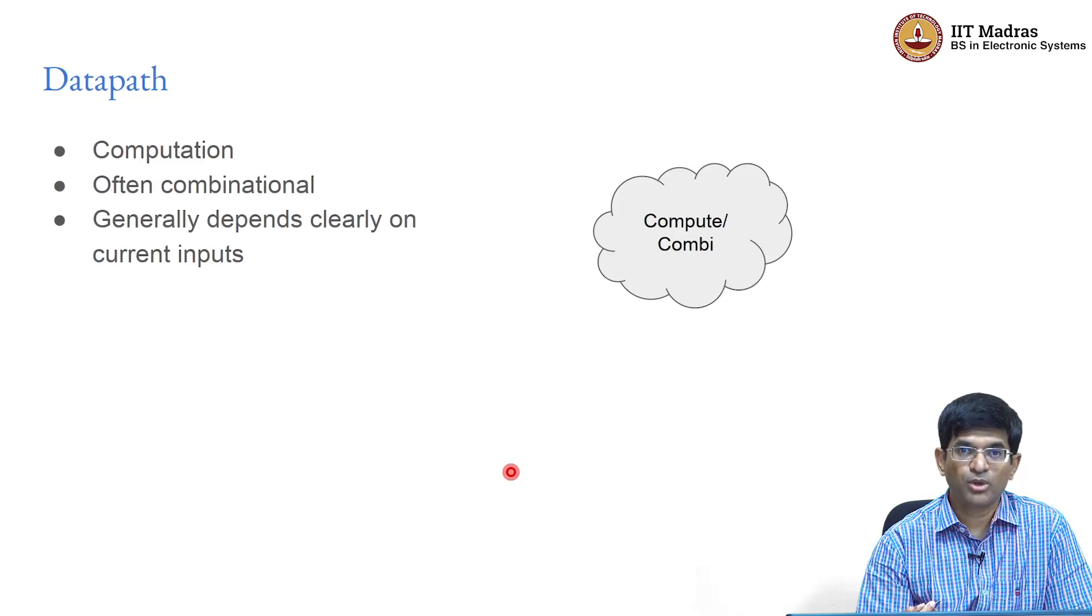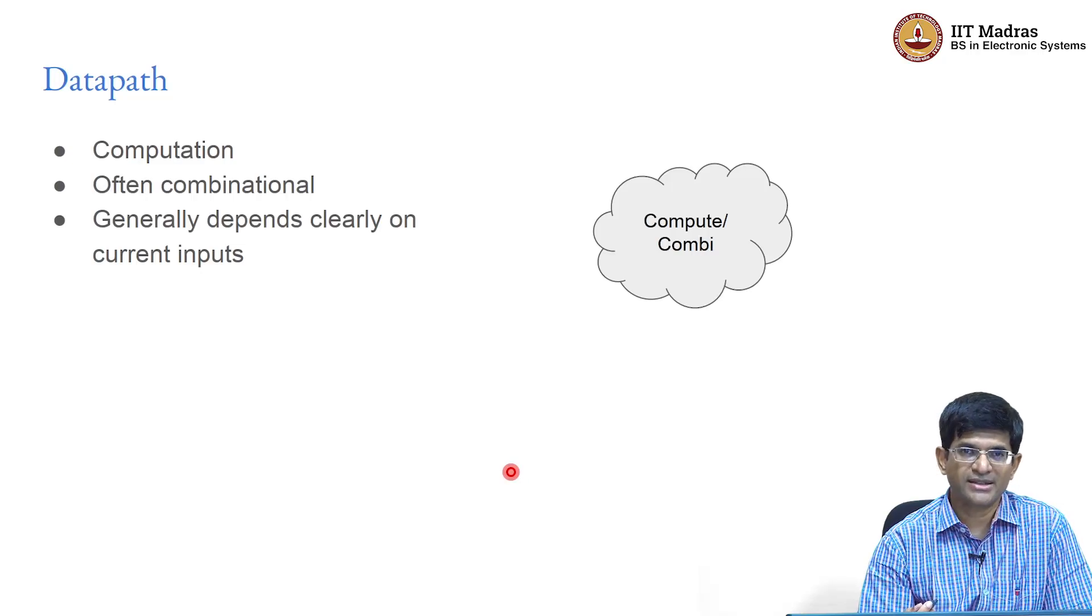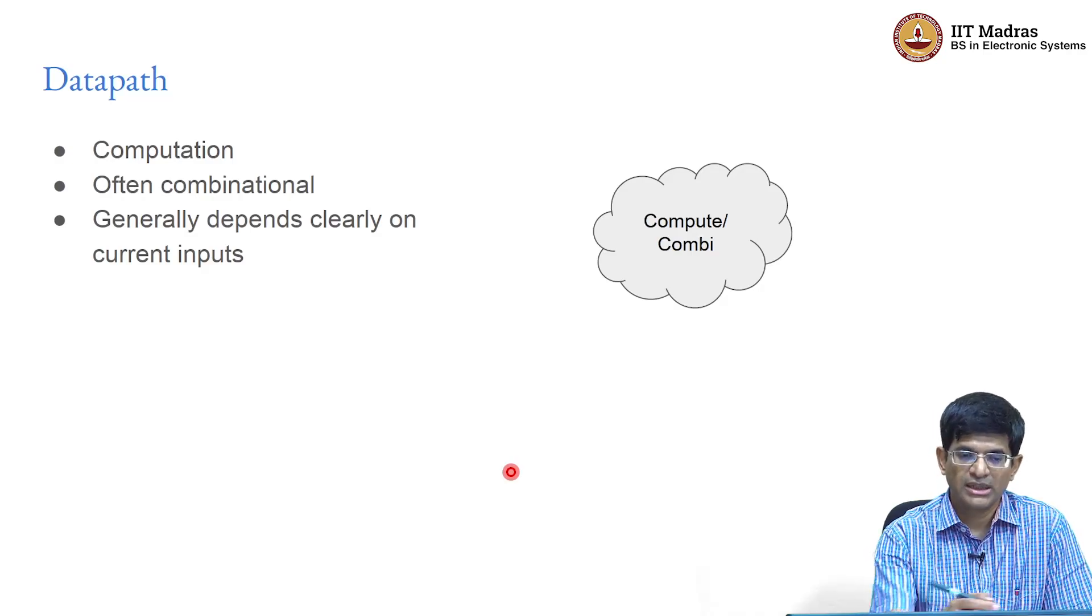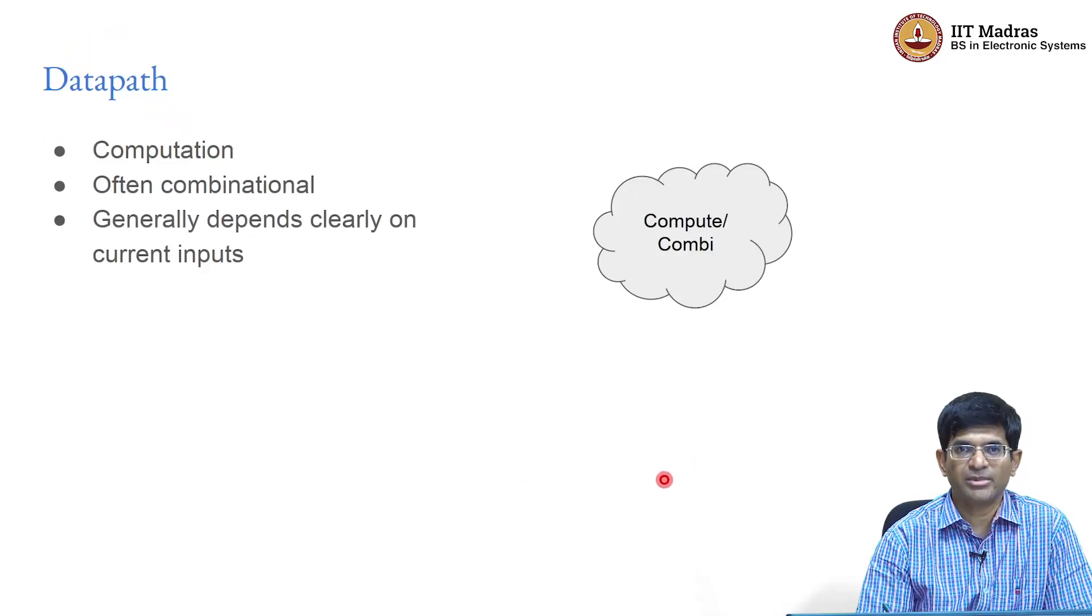A multiplier could potentially be implemented as a multiple clock cycle circuit, something which takes many clock cycles to generate the result. But still the result depends only on the inputs, it does not depend on some other notion of state. There is an input, there is a clearly defined output and that output depends on the input. That is what we mean by the data path.